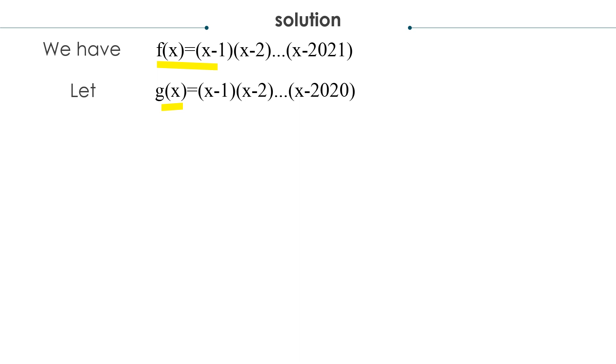I let g(x) equal (x-1)(x-2) until (x-2020). I left one term behind, which is (x-2021), so I can substitute into that part.